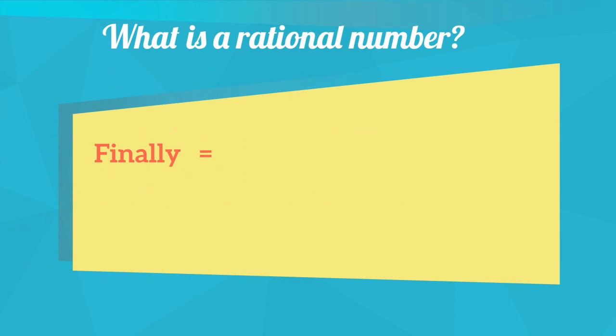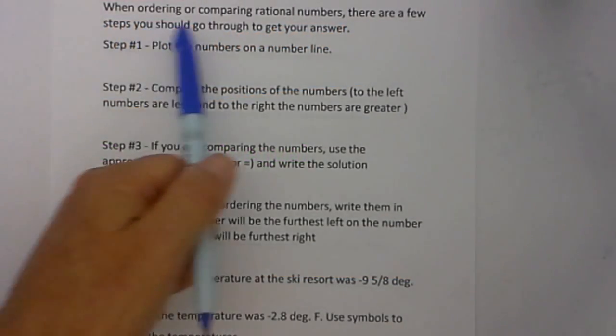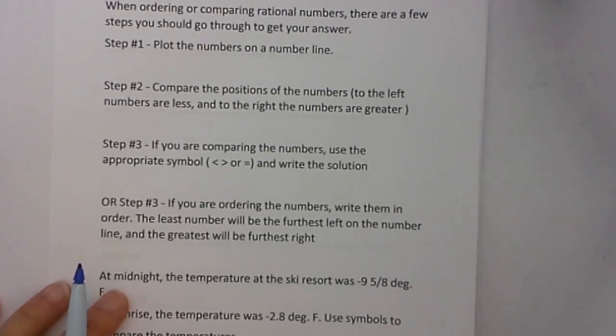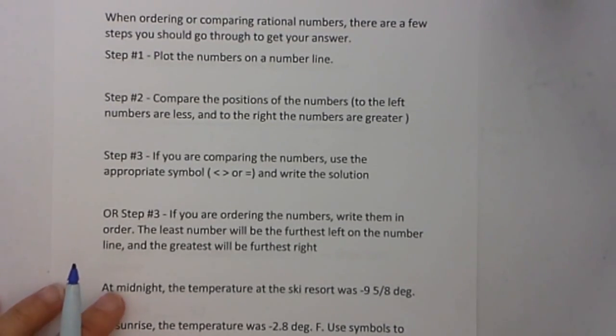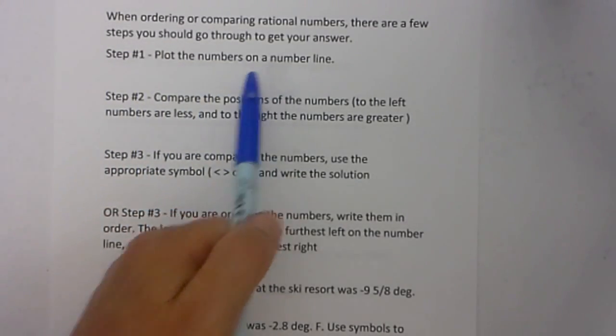And finally, this symbol is equal: 5 is equal to 5. In this video I am going to talk about ordering and comparing rational numbers. There are a couple steps you can go through in order to help you compare the rational numbers. Step 1 is you should plot the numbers on a number line.